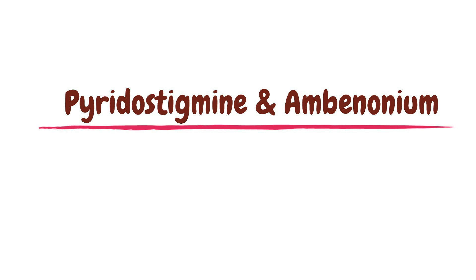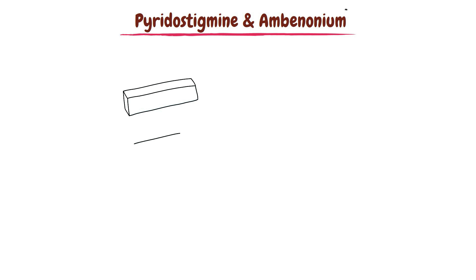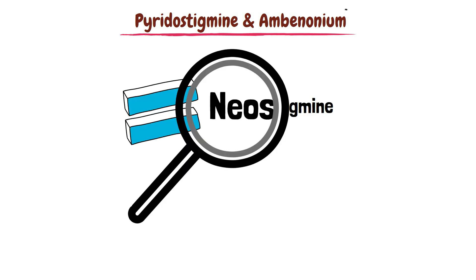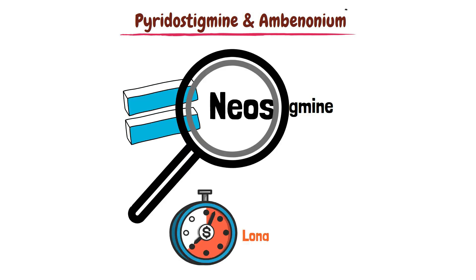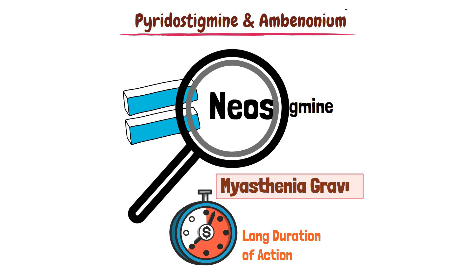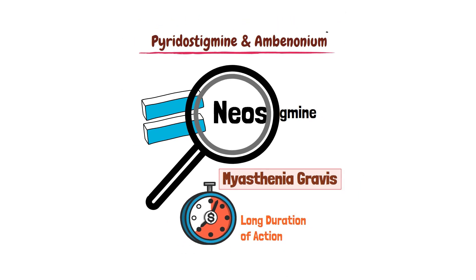Pyridostigmine and ambenonium are other reversible inhibitors of acetylcholinesterase and resemble neostigmine, but both have a longer duration of action than neostigmine. Therapeutically, these are used for the chronic management of myasthenia gravis.